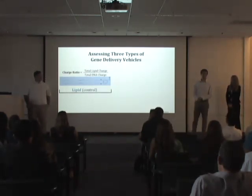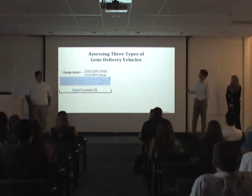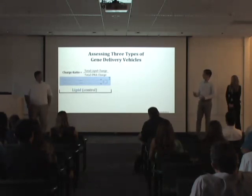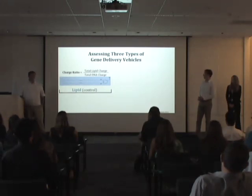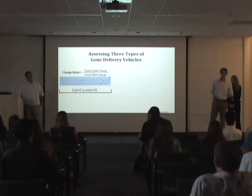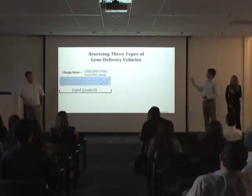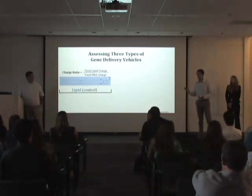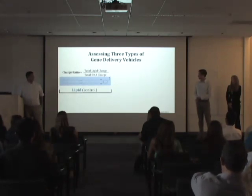Our first gene delivery vehicle consists of neutral lipids and this is our control. When dealing directly with cells, this gene delivery vehicle is very efficient. However, when we are considering more complex biological systems — consider the human body — this type of nanoparticle is quickly taken out by the immune system, kidneys, and liver.